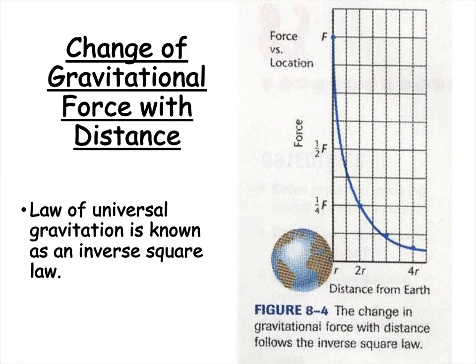The law of universal gravitation is known as an inverse square law. What that means is that as we change the radius, then the force changes by the inverse of that squared. As you see, as our force decreases here, our distance increases. Our distance that it will read or pull from the earth.